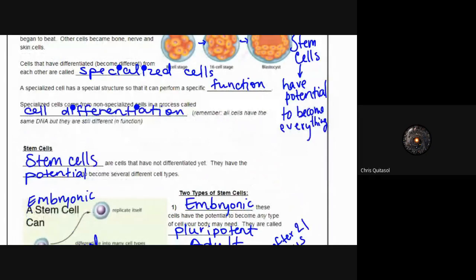it's a process called cellular differentiation—differentiation meaning it becomes a bunch of different things.